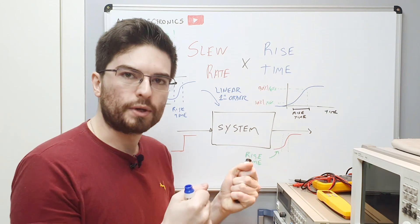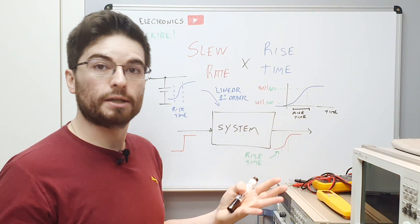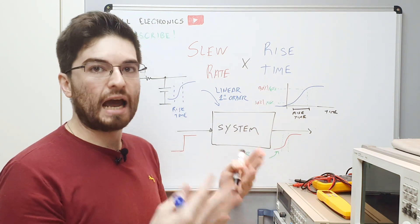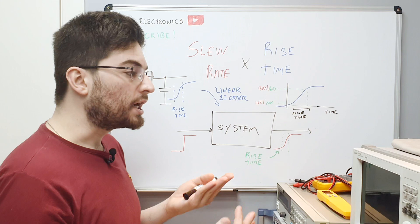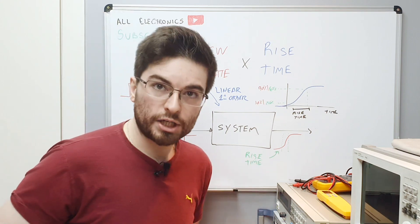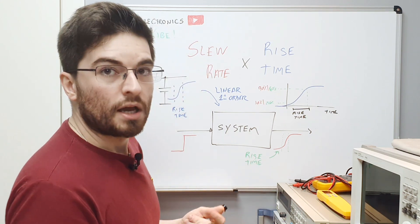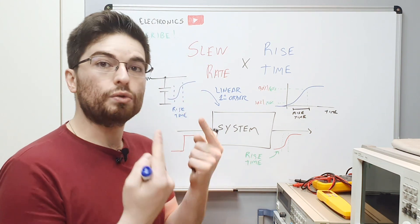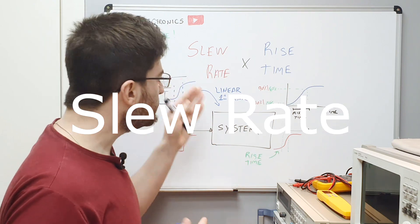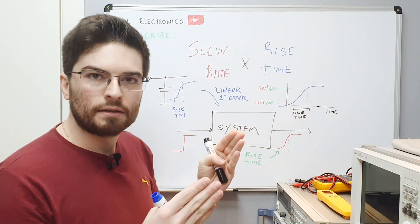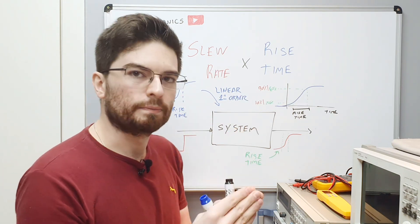When we excite a circuit in the nonlinear region, a lot of times we're going to have current saturation or voltage saturation, and this will lead to slew rate. It's the maximum speed at which a signal can transition.